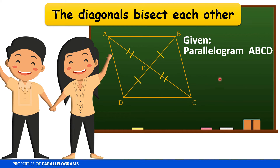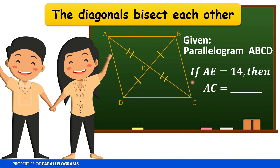Given parallelogram ABCD, if AE is equal to 14, then AC equals 28, because AE is half of diagonal AC. Since the two parts of the diagonal are equal, the other half is also 14, making the whole diagonal AC equal to 28.